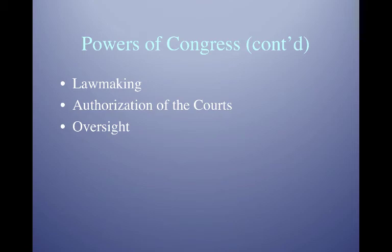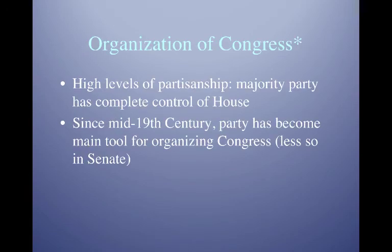Congress is organized in a very partisan way. Senators vote with their party on average about 83% of the time; House members vote with their party about 90% of the time. On any substantial vote, the vast majority of Democrats are on one side and the vast majority of Republicans are on the other side, with fewer and fewer exceptions. Since the 19th century, party has become the main tool for organizing Congress, and the majority party has complete control of the House.